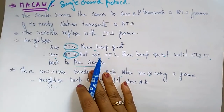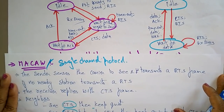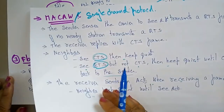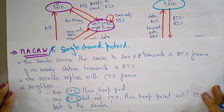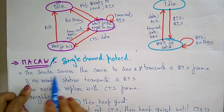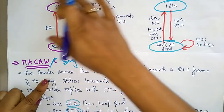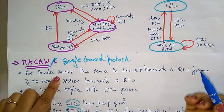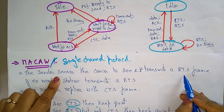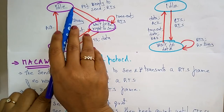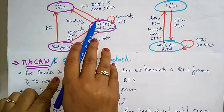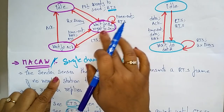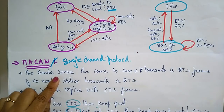Let me explain MACAW with an example. MACAW — Multiple Access Collision Avoidance Wireless — here the sender and receiver operate as follows: the sender sends a carrier sense first and transmits the Request to Send. The sender is in an idle state, and when a packet is ready to send, it initiates by sending the Request to Send and then waits — it waits whether it can send the data or not.